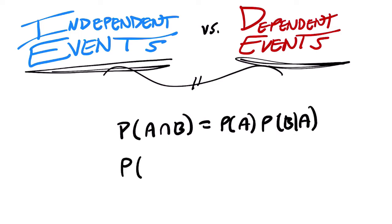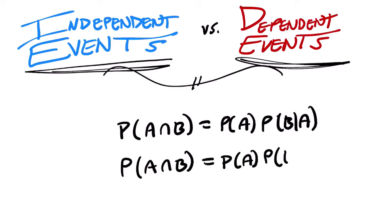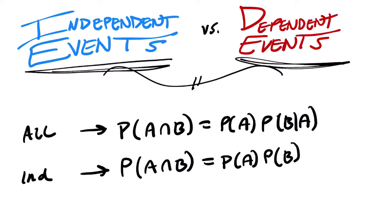For all events, especially dependent ones, that first definition is true. For independent events, this second one is also true — you can just multiply the two probabilities together. So the first definition is for all events, and the second definition is specifically for independent events. So where does this come from, and why does it work that way?